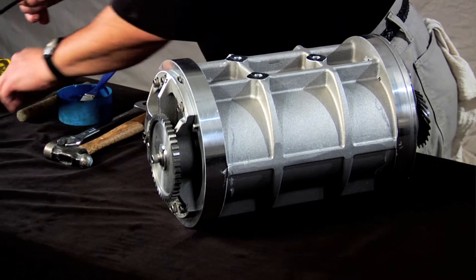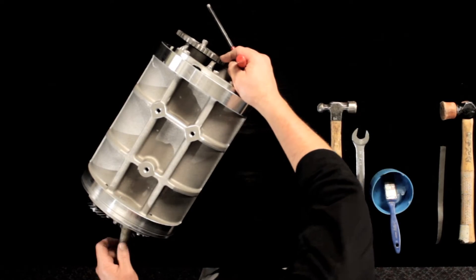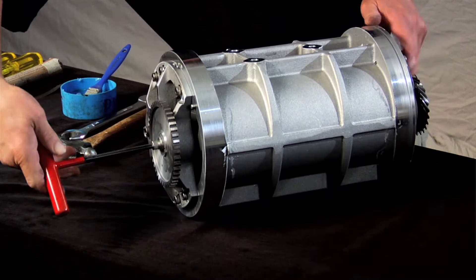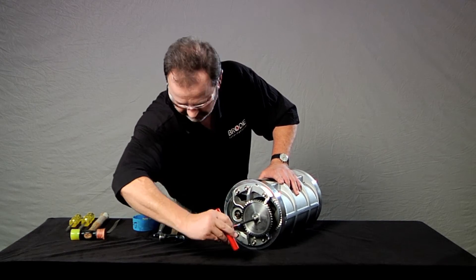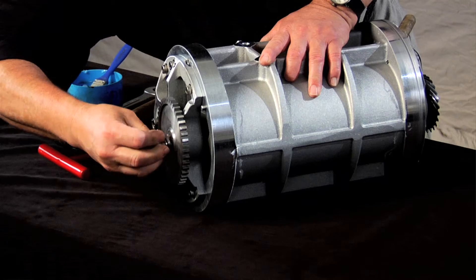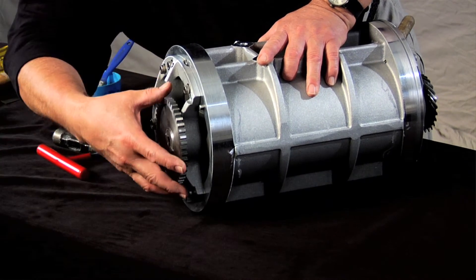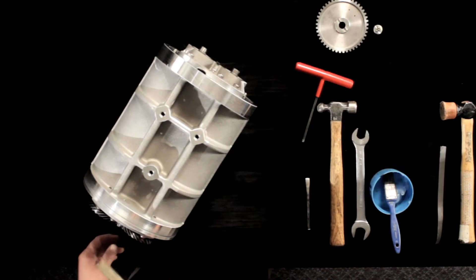The first step is to remove the pulse output gear. To do this, you'll need to block the rotors with a blocking stick to prevent them from turning. Then use the Allen wrench to loosen the locking screw and locking washer and remove the gear. After removing the gear, set it aside. At this point, you can remove the blocking stick.